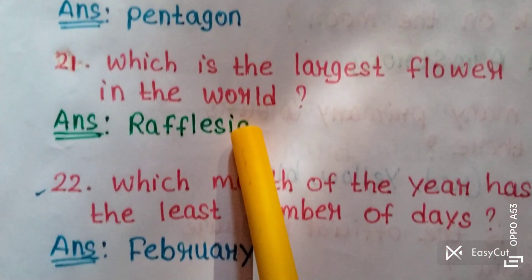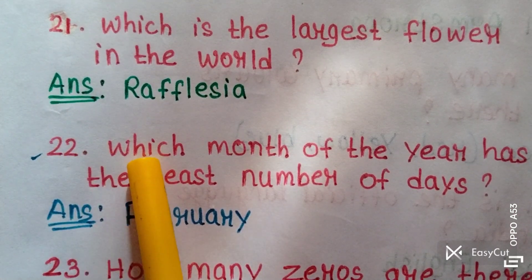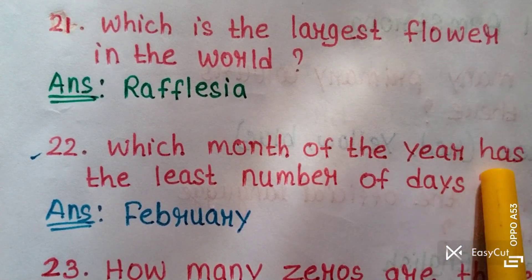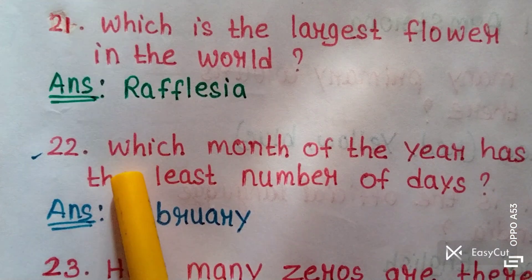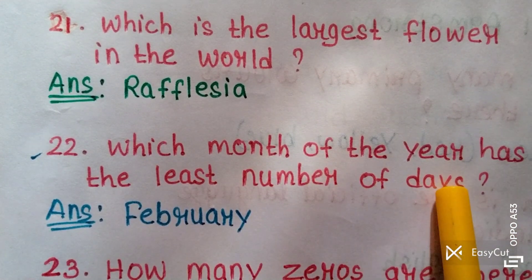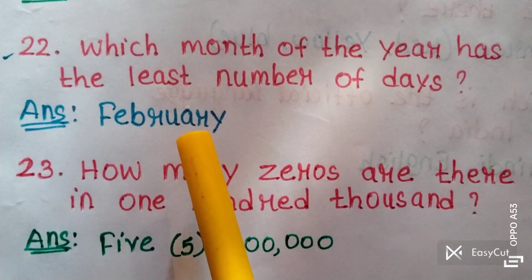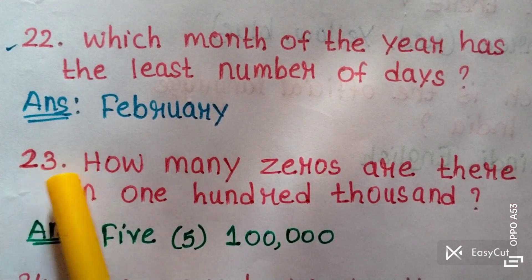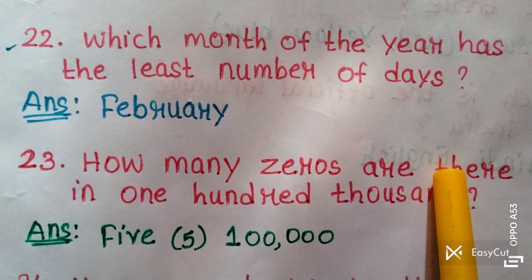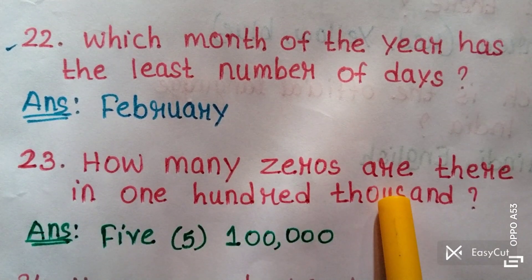Question twenty-two: Which month of the year has the least number of days? Answer: February. Question twenty-three: How many zeros are there in 100,000?